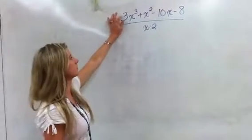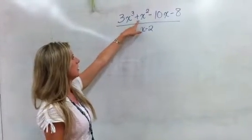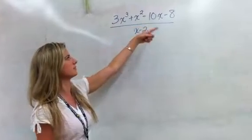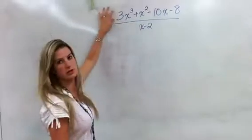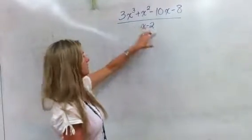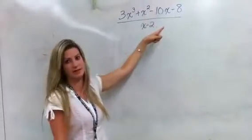So let's say I wanted to divide 3x to the third plus x squared minus 10x minus 8 by x minus 2. So let's say I know that x minus 2 is a factor of this, and I want to figure out if I factor this out of this, what am I left with.